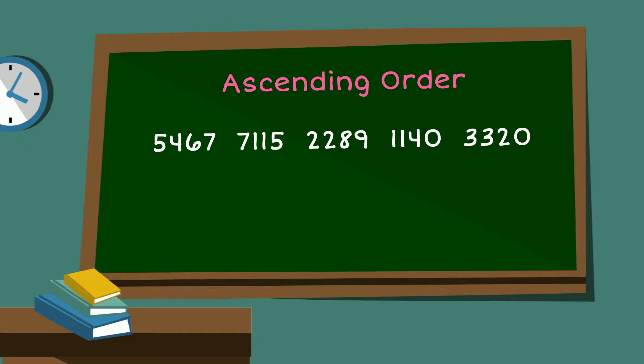So we will start from our smallest which is 1,140. Next in line for our smallest number would be 2,289, followed by 3,320, then 5,467 and finally 7,150. We did it! So we went from this lineup to ascending order starting with our smallest.